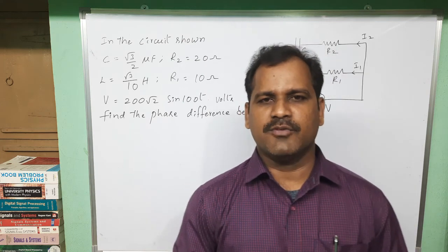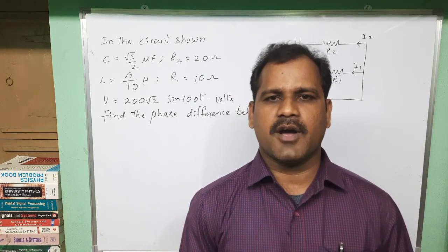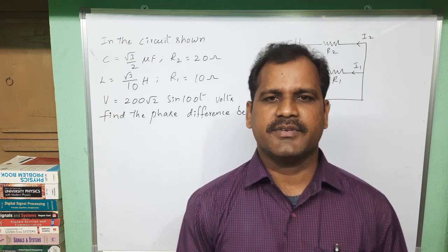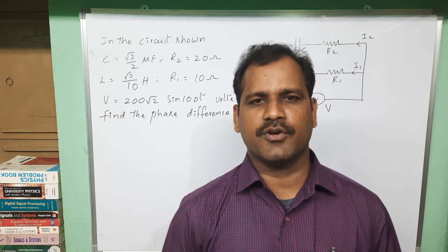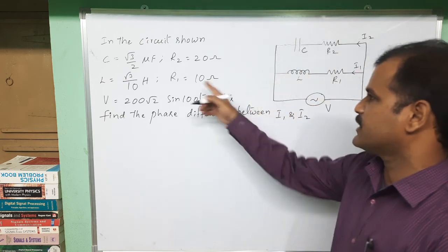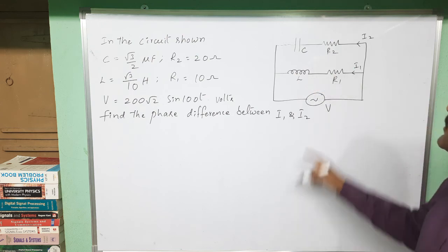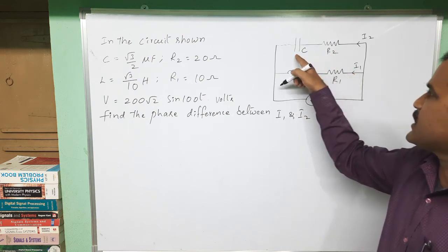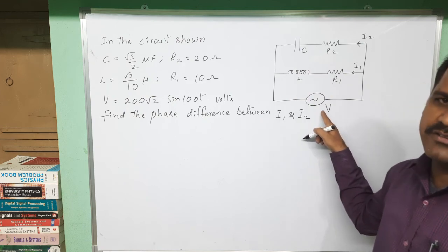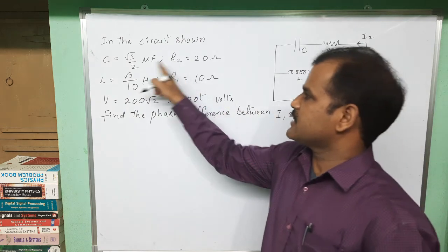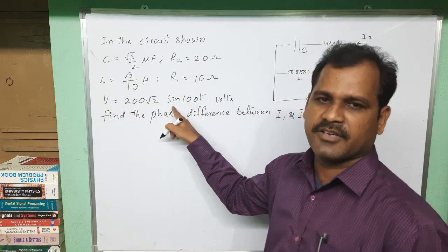Good morning students, welcome to the challenge series. In this video I am going to solve a problem from the topic of alternating currents. This problem is from the IIT previous papers, asked in 2019. The given circuit consists of one resistor-capacitor branch, one resistor-inductor branch, and an applied voltage. The resistor, capacitor, resistor, inductor values and the applied voltage expression are all given.